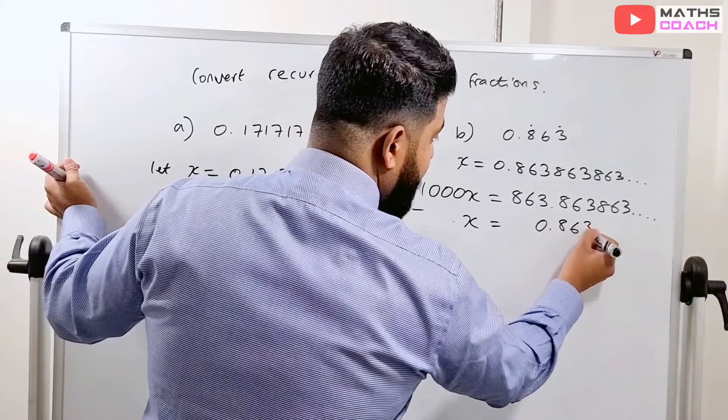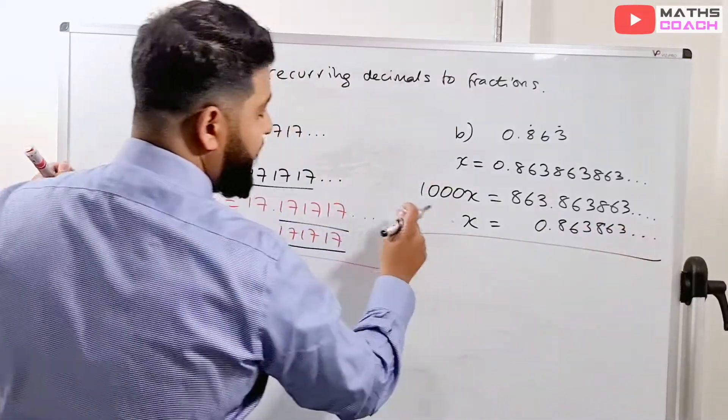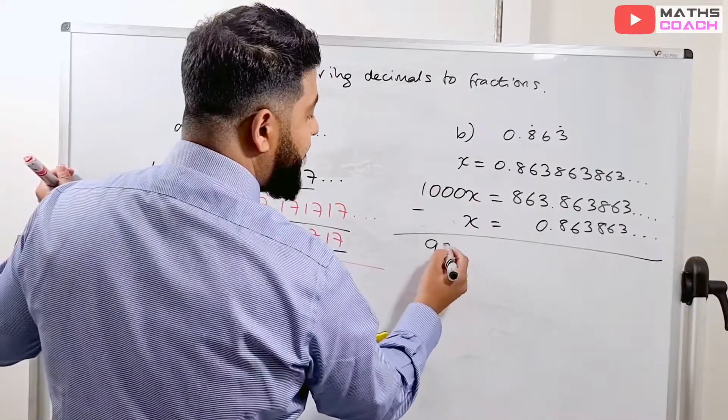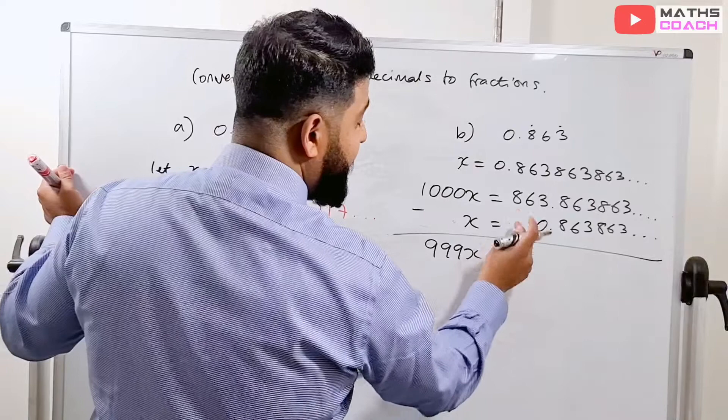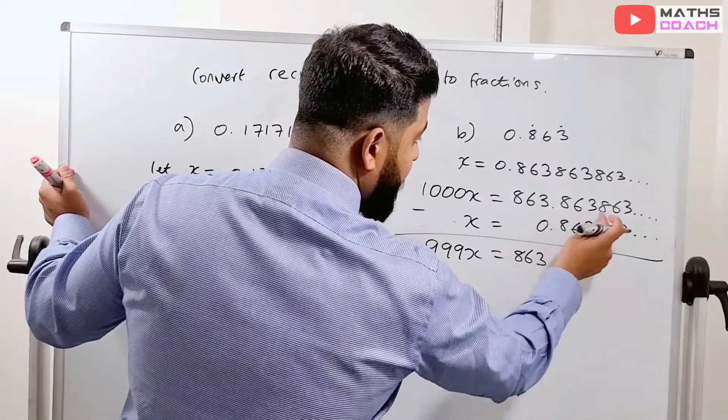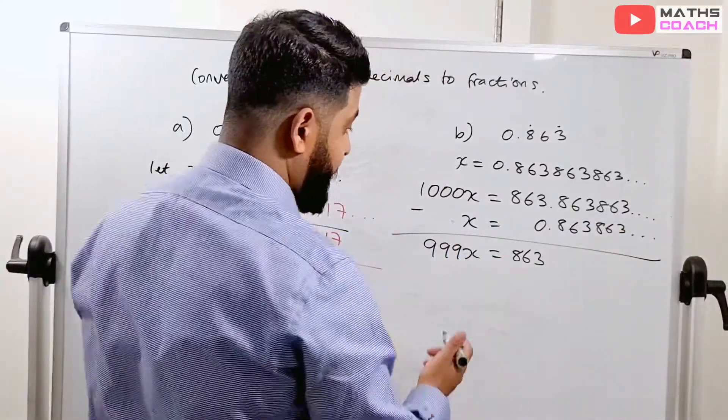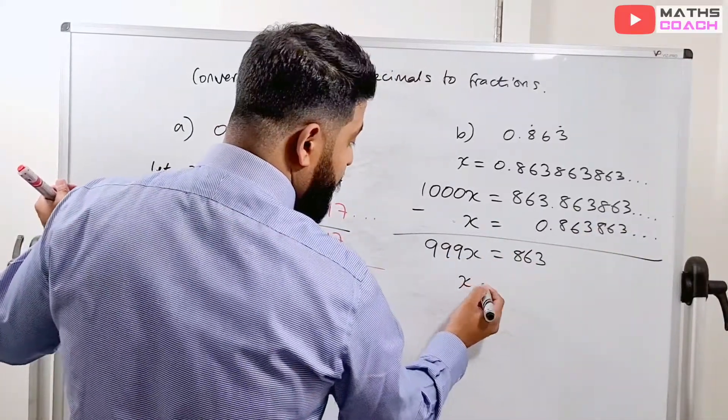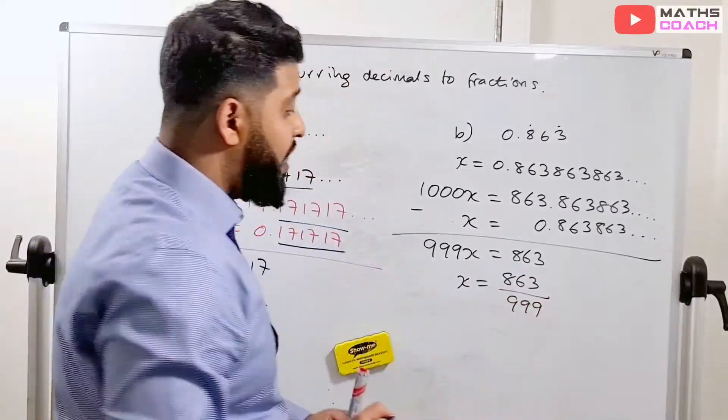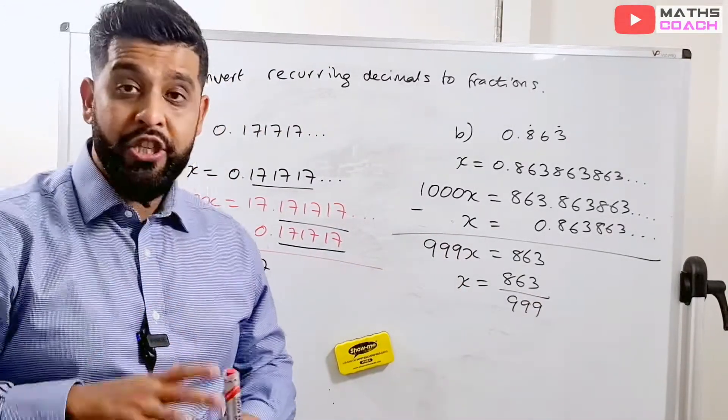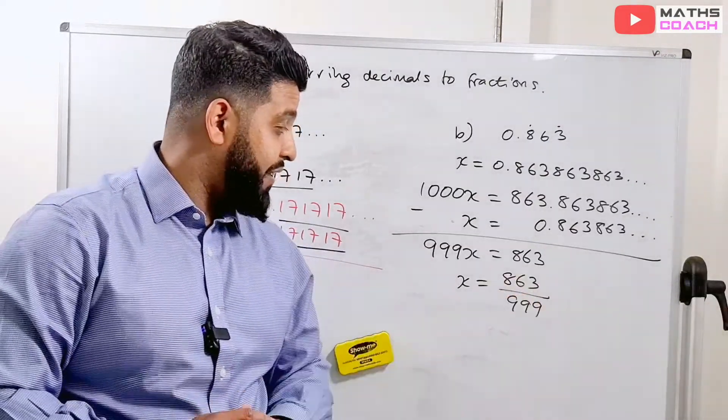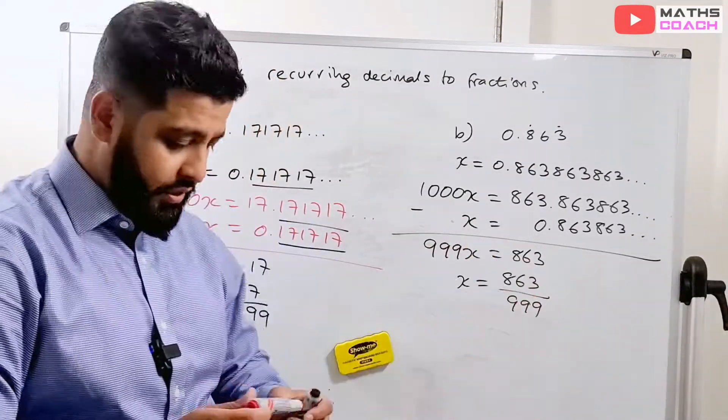Now, this 863.863 pattern after the decimal place is exactly the same as 0.86386386 after that decimal place. So again, we can bring the x in and we can take those numbers away. So we have 0.863 here as well. So, 1,000 take away x, 1,000x take away 1x is 999x. 863 take away nothing is 863. And of course, the decimal place values, they just cancel each other out and they are no longer there. So we have x is equal to 863 over 999. Once again, try to simplify that if you can. I've checked on the calculator, I can't simplify this any further. So you leave the answer like this in this instant.